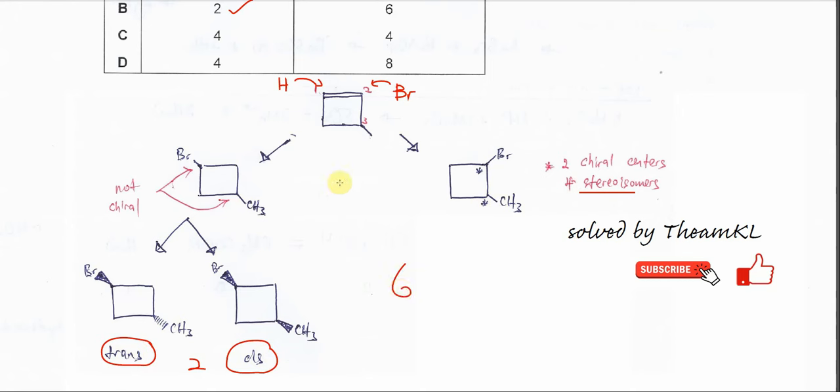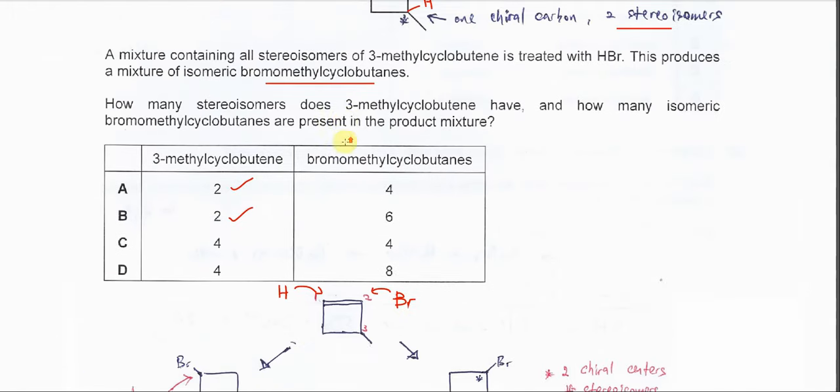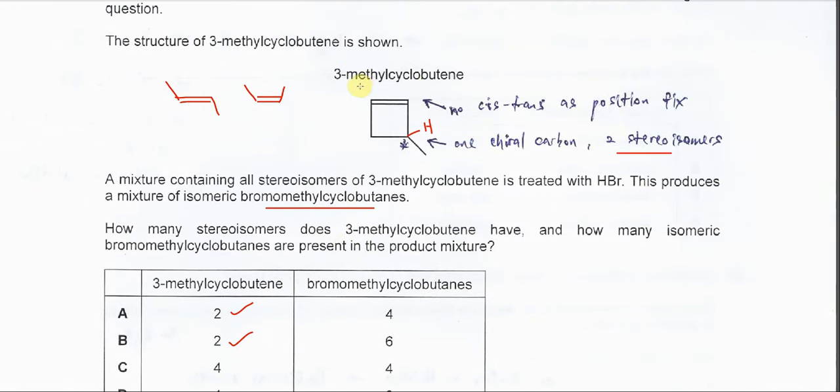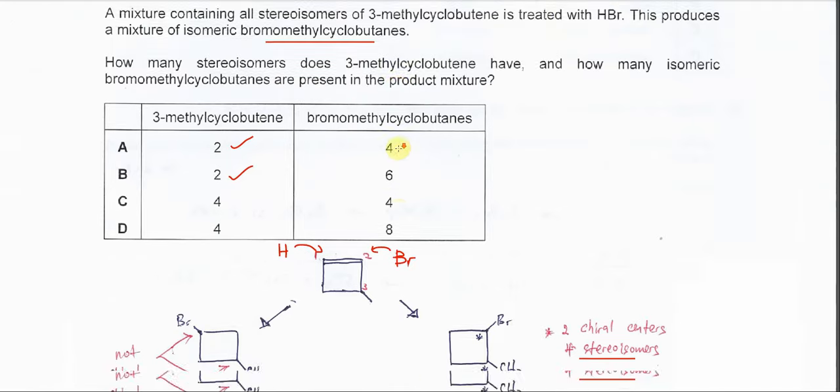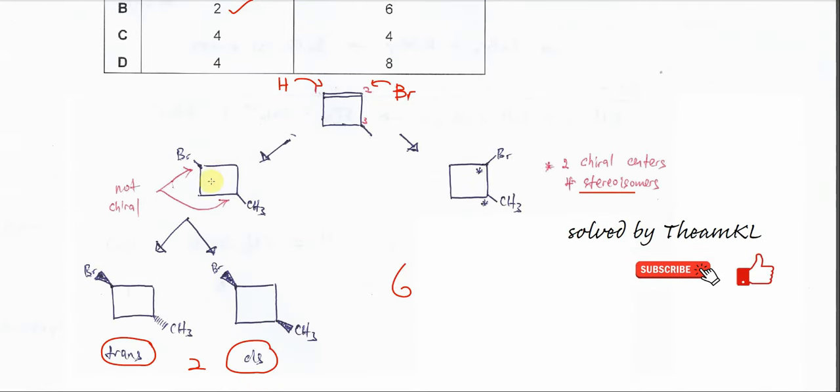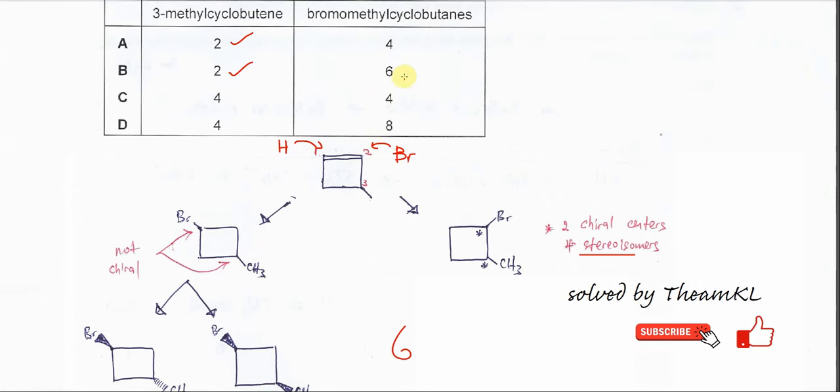So when HBr is added to this compound, 3-methylcyclobutene, it will form these two products. And these two products will form six isomers, six stereoisomers. So the answer therefore is B.